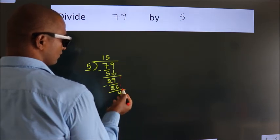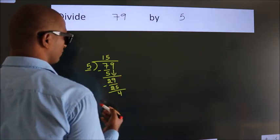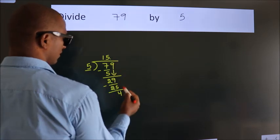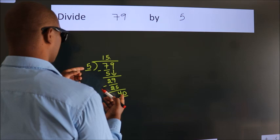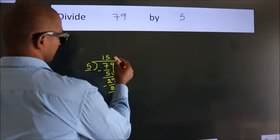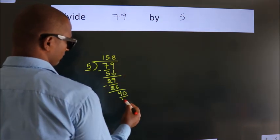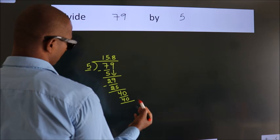After this, no more numbers to bring it down. So, what we do is, we put dot, take 0. So, 40. When do we get 40 in the 5 table? 5 eights 40.